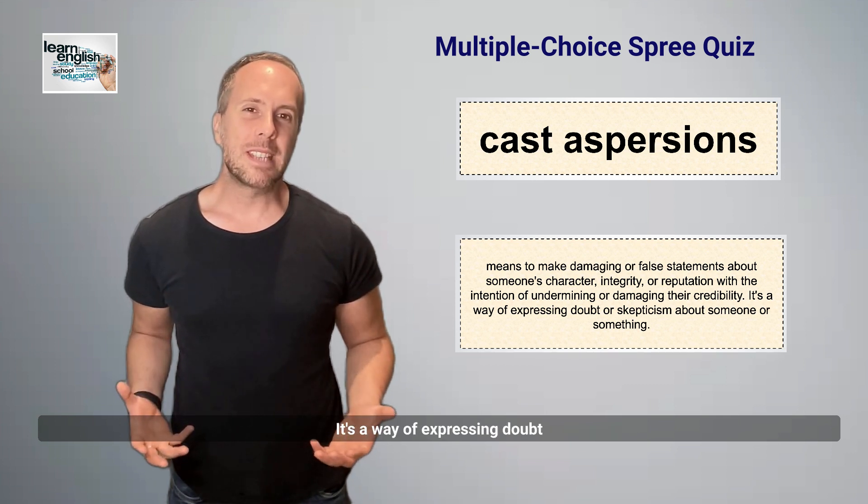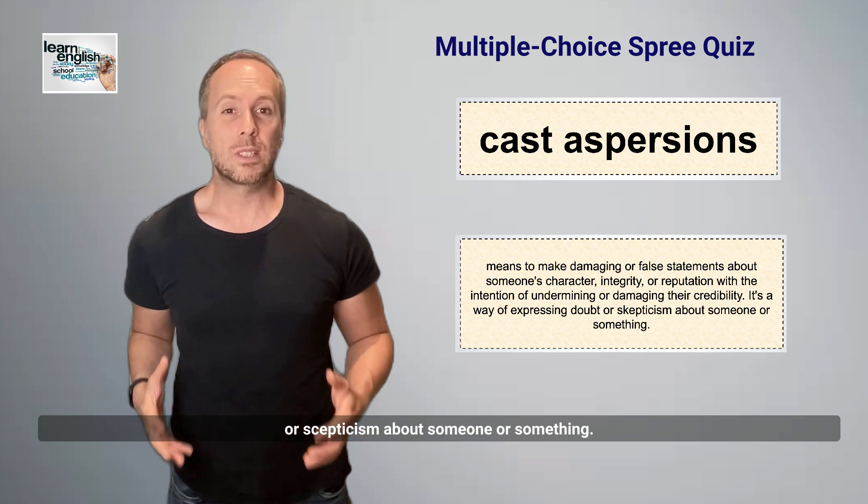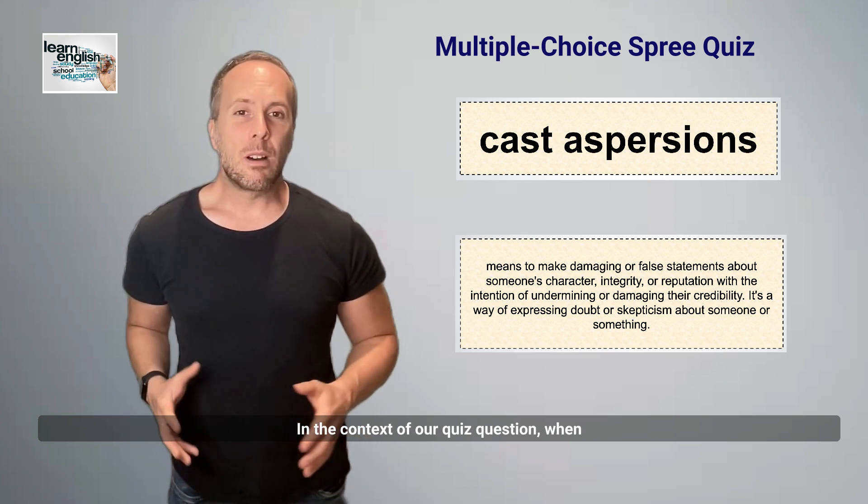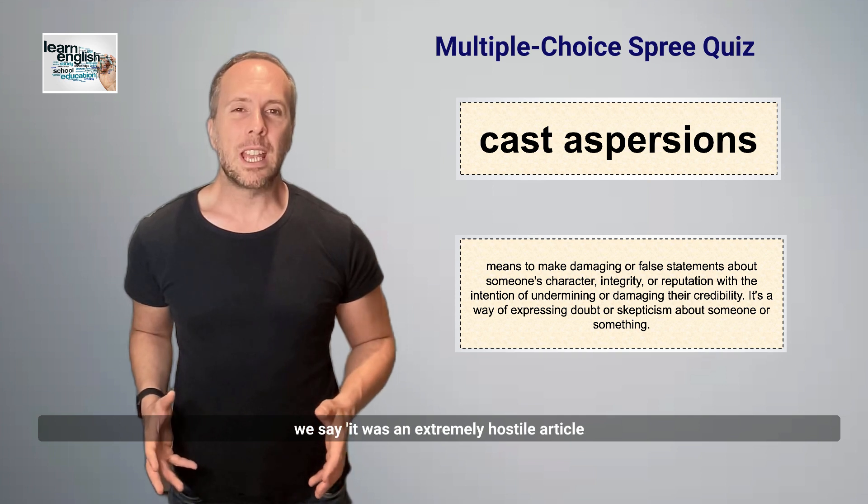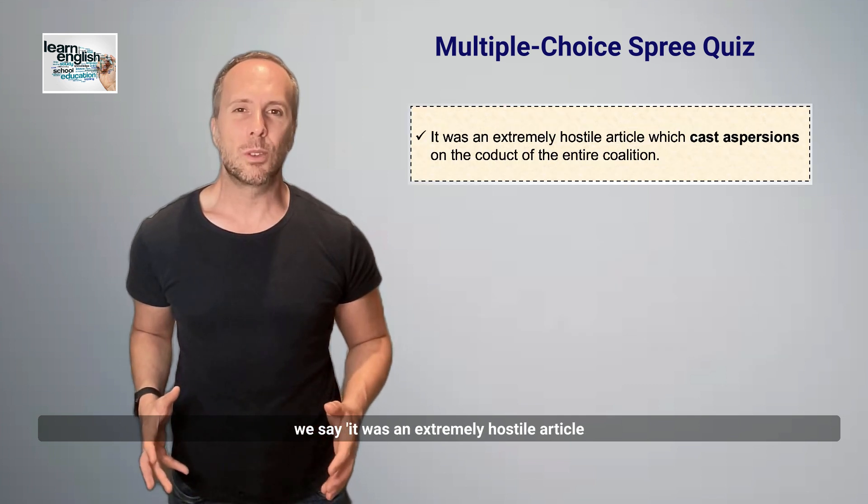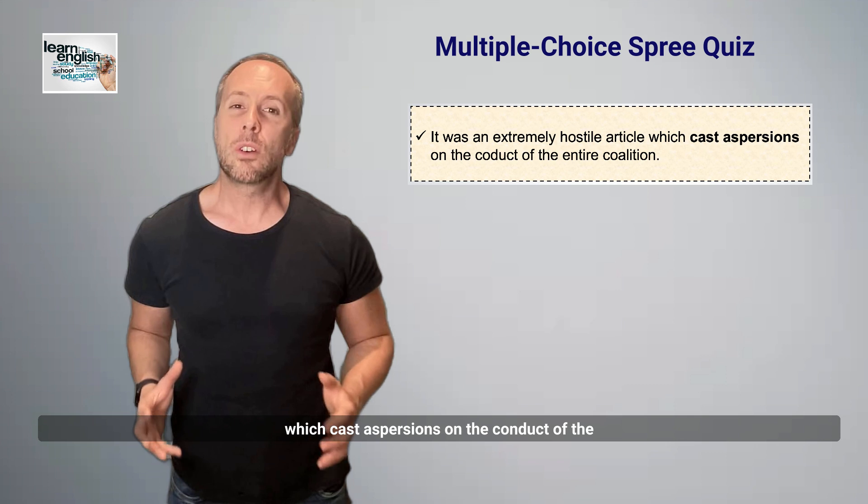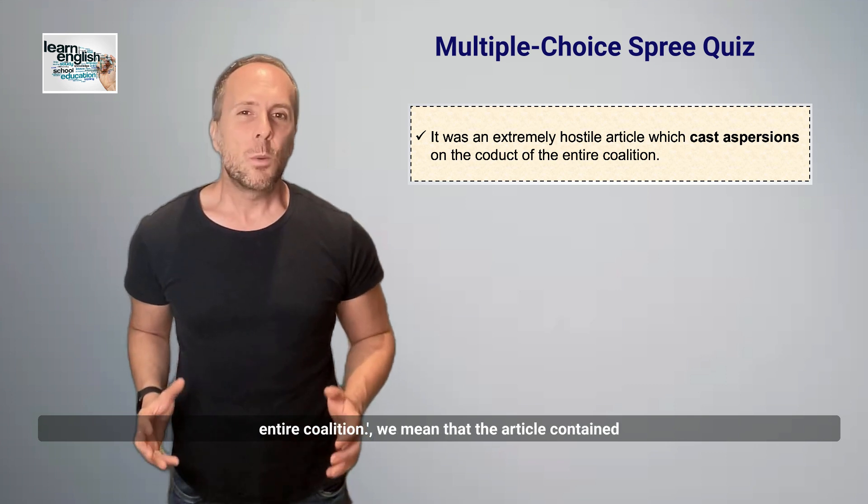It's a way of expressing doubt or skepticism about someone or something. In the context of our quiz question, when we say 'it was an extremely hostile article which cast aspersions on the conduct of the entire coalition,' we mean that the article contained damaging or unfounded accusations that questioned the credibility or integrity of the coalition's actions or members.